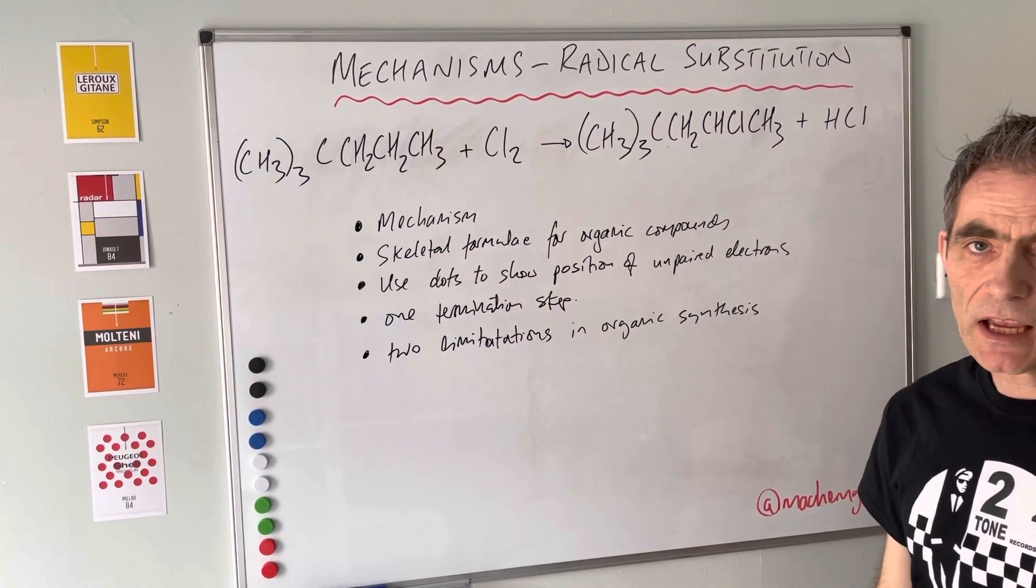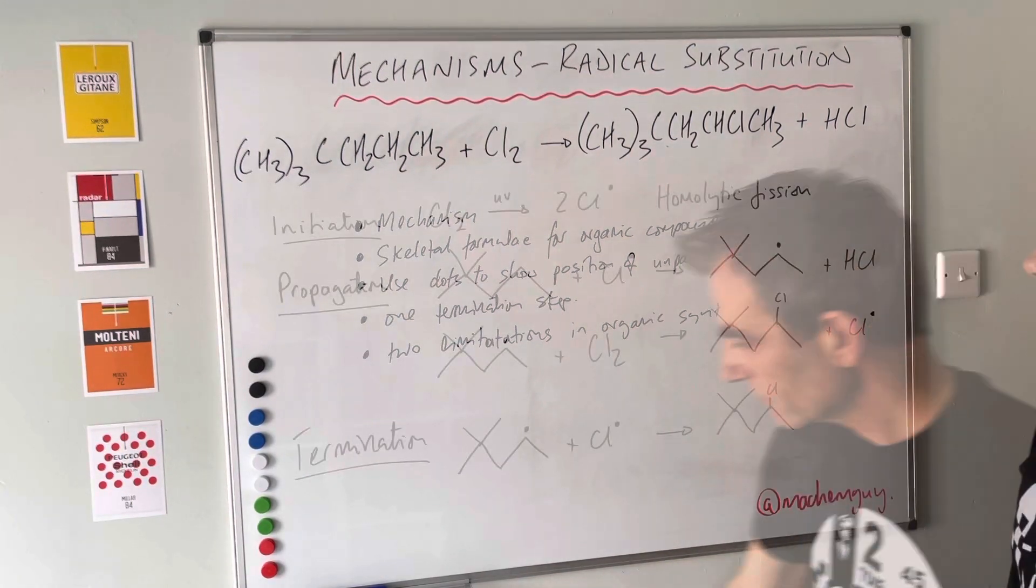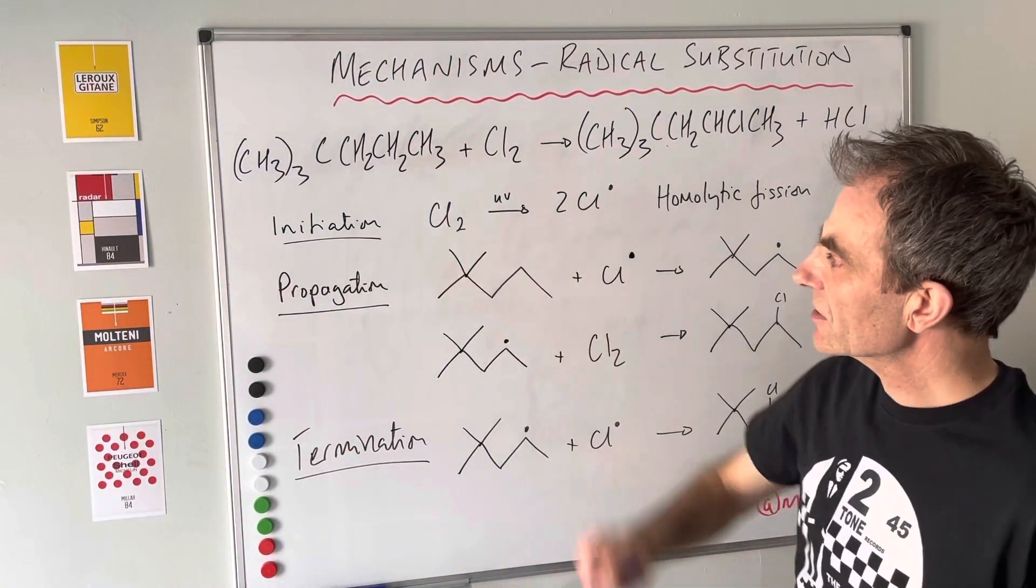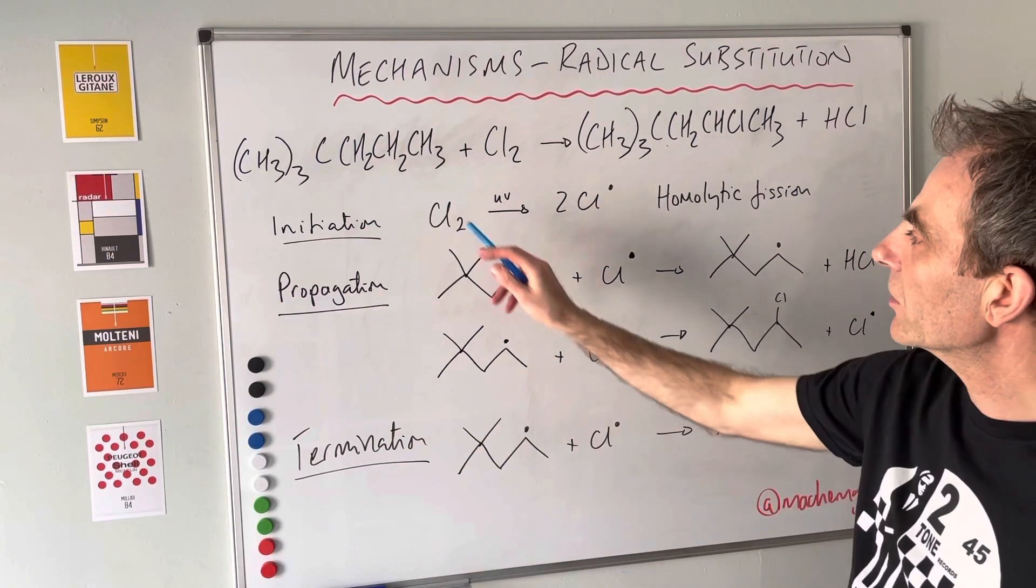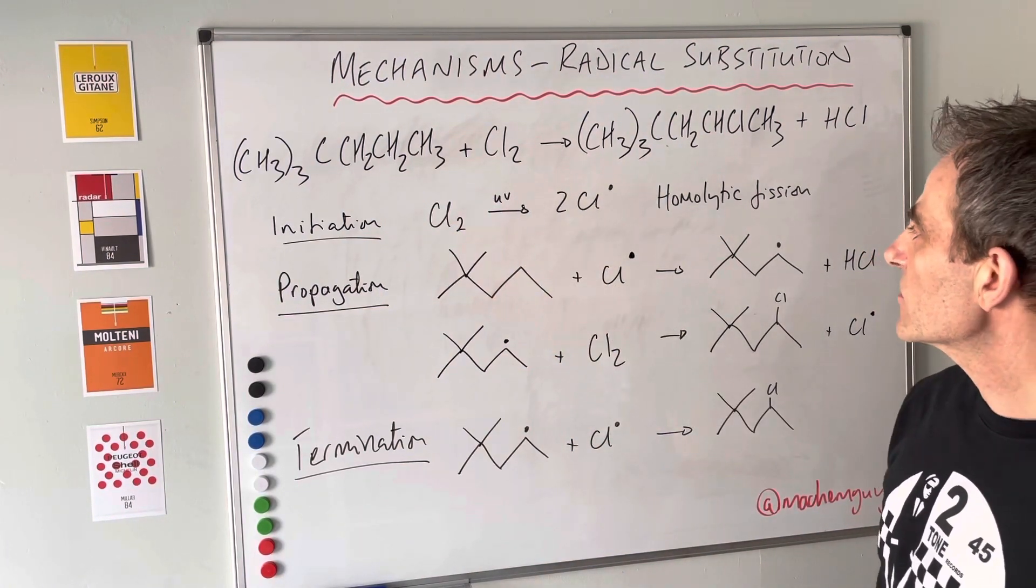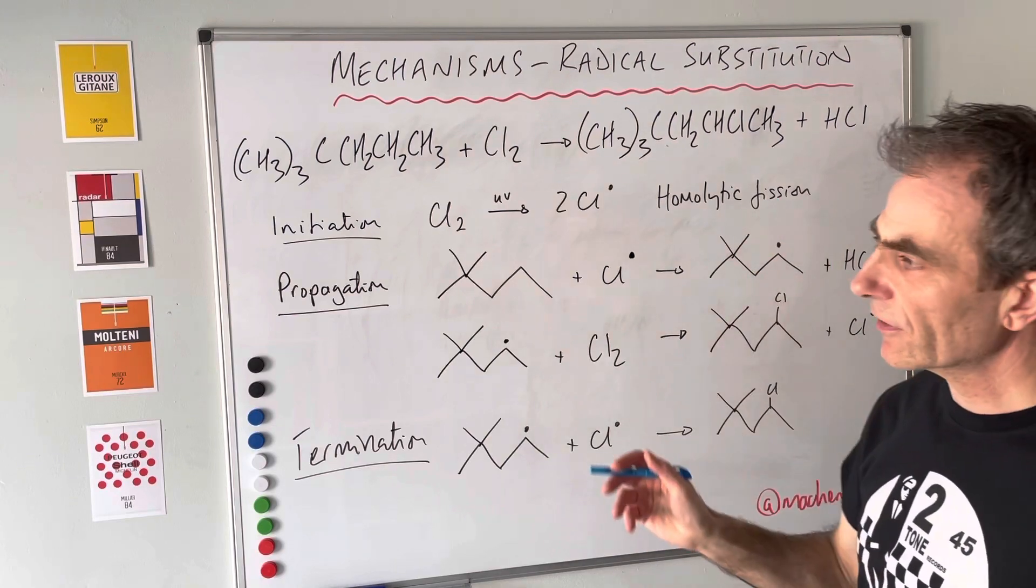Here's the mechanism. Initiation is the first step, where the chlorine molecule is broken by UV light. It's broken homolytically, so the covalent bond is broken...